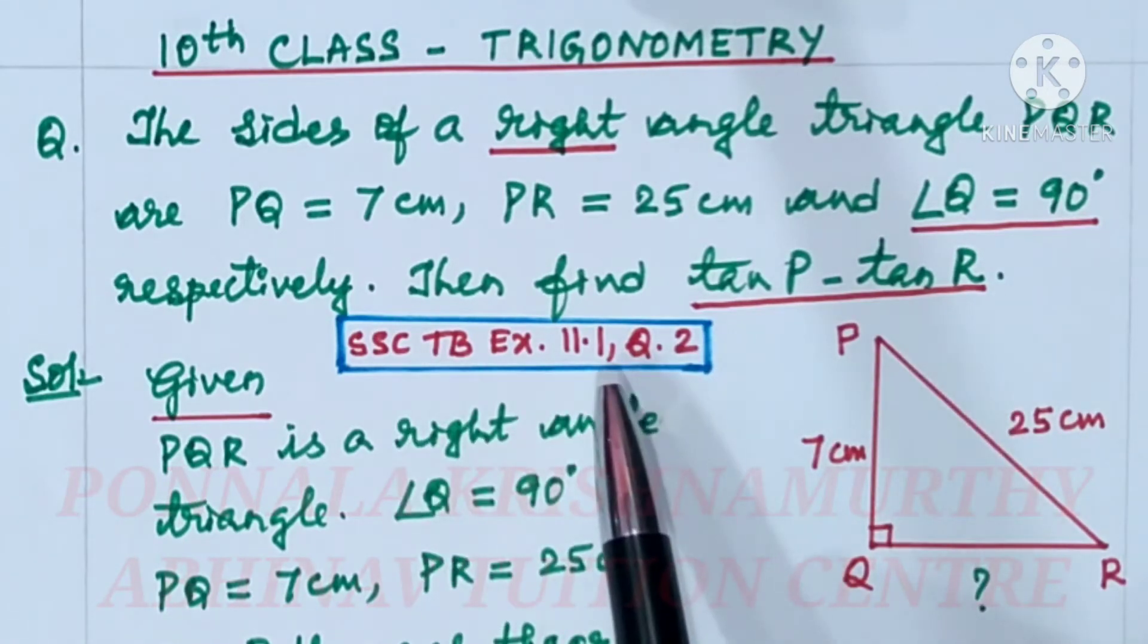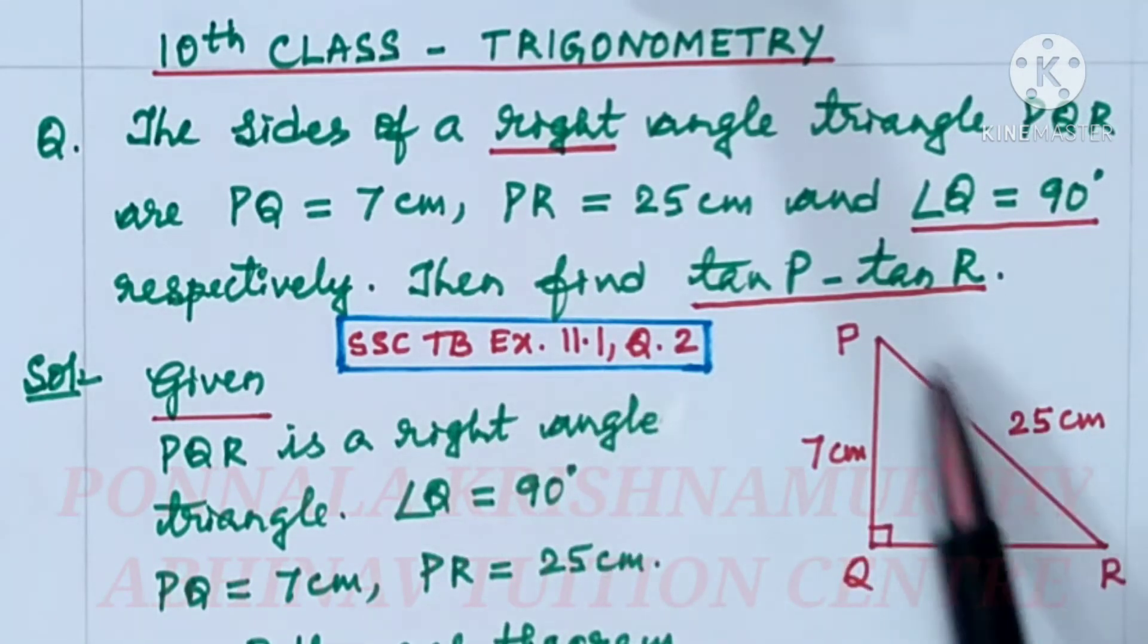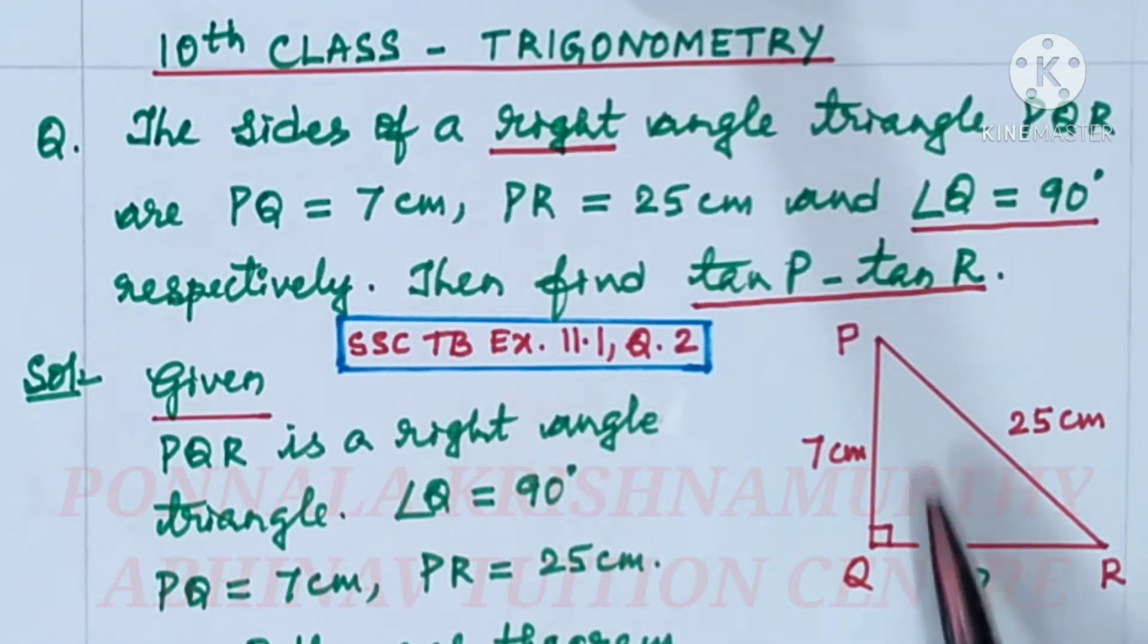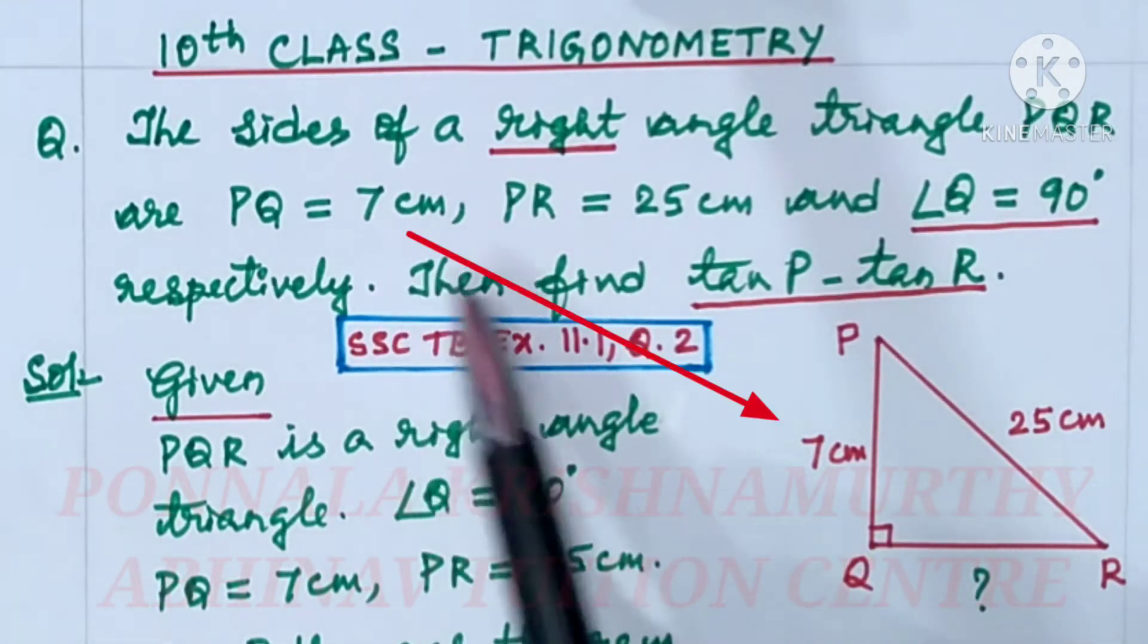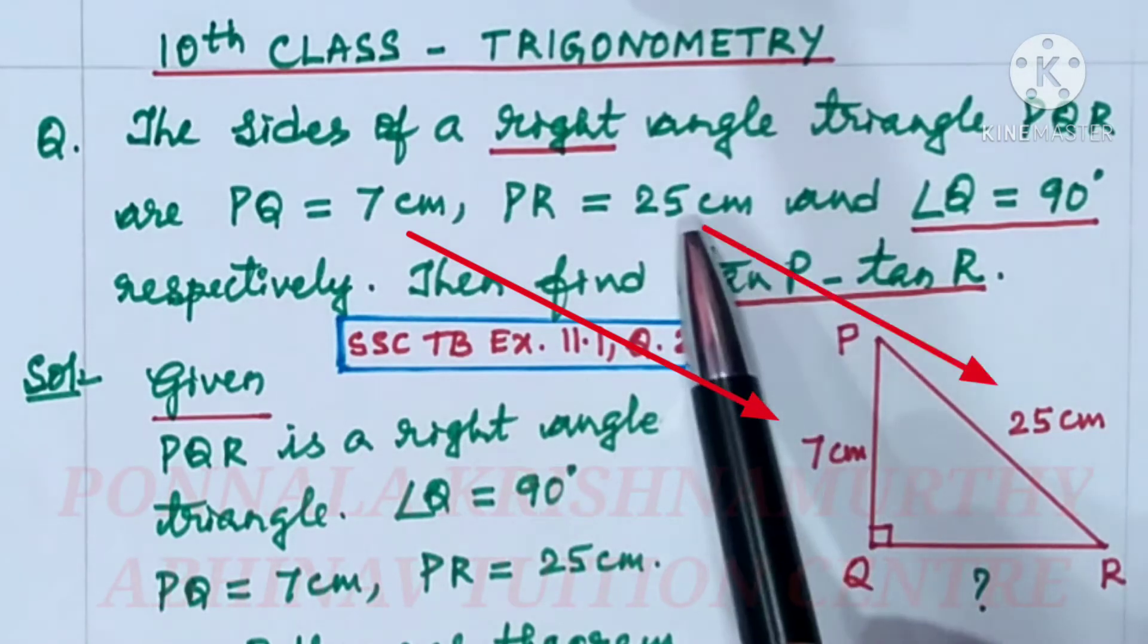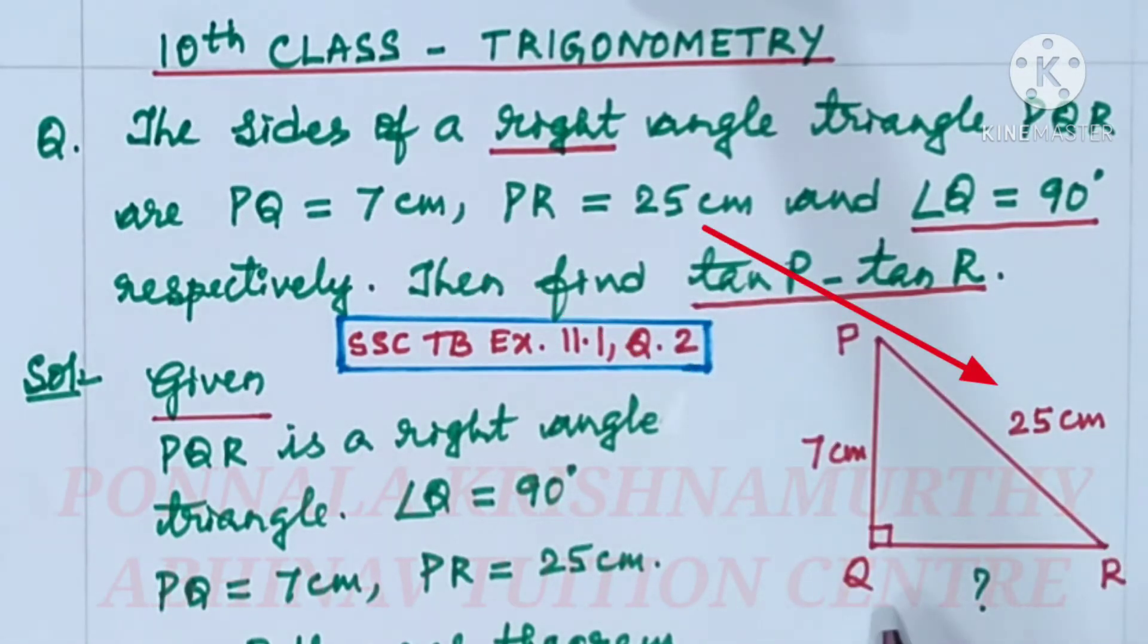Reference is here. This is a right angle triangle, right angle at Q. PQ is 7 centimeters, PR is 25 centimeters. We have to find out QR. Angle Q is 90 degrees.